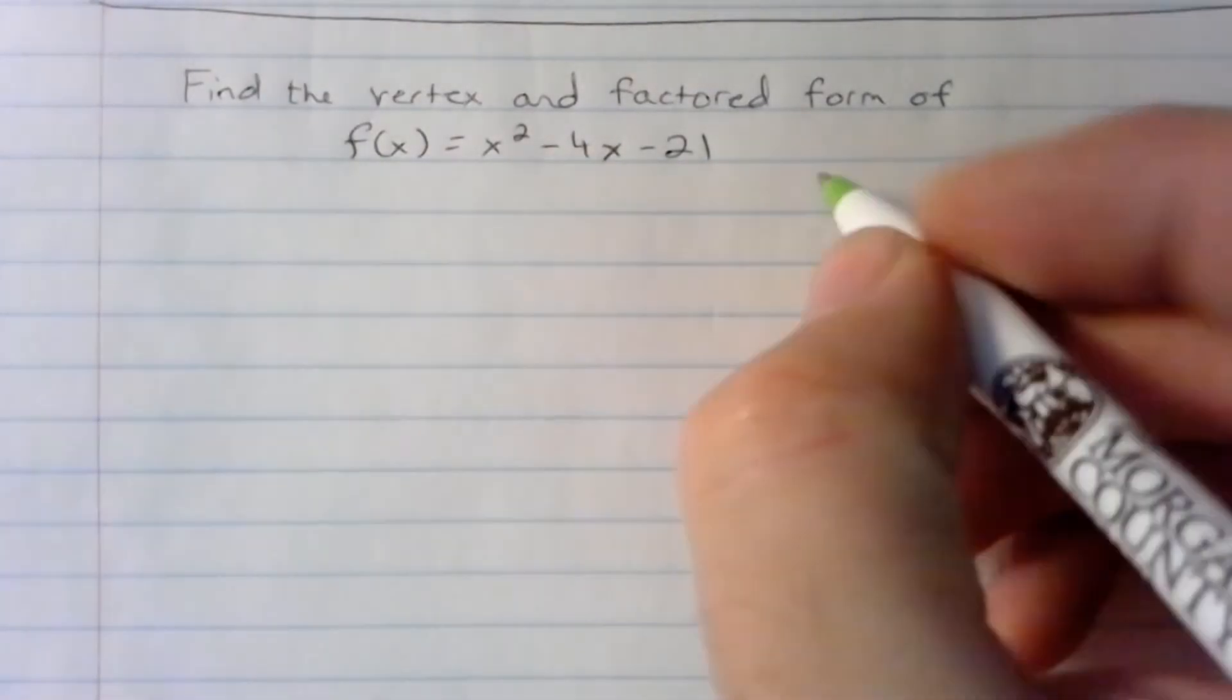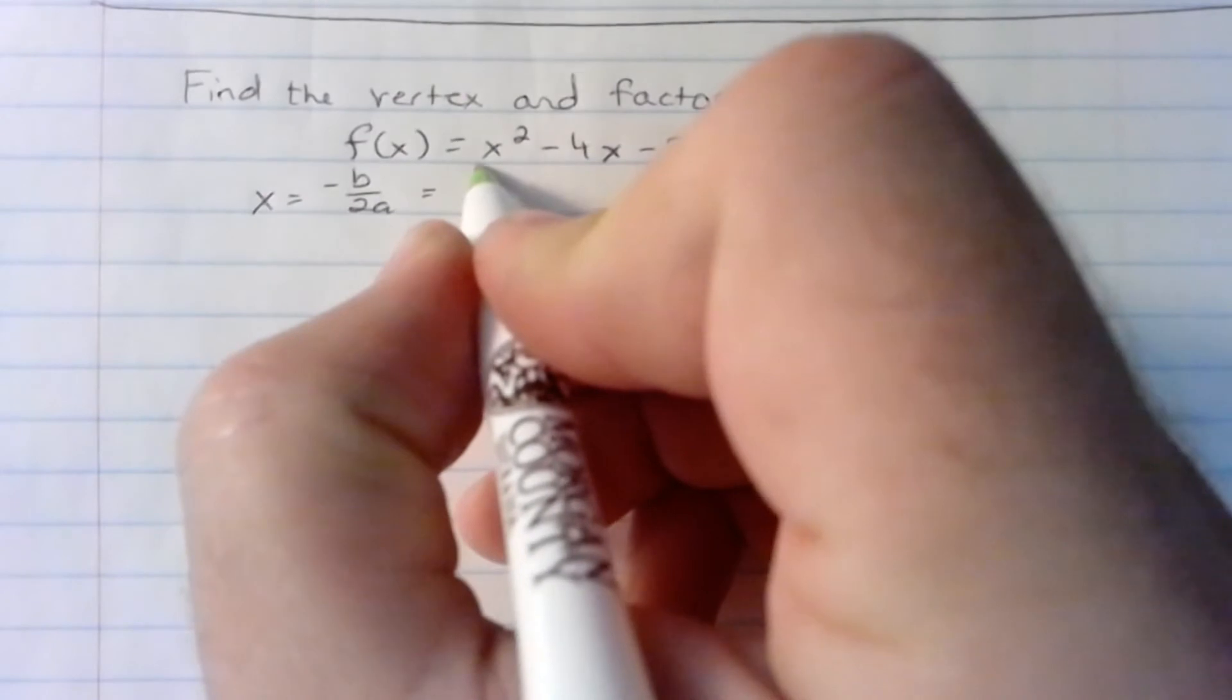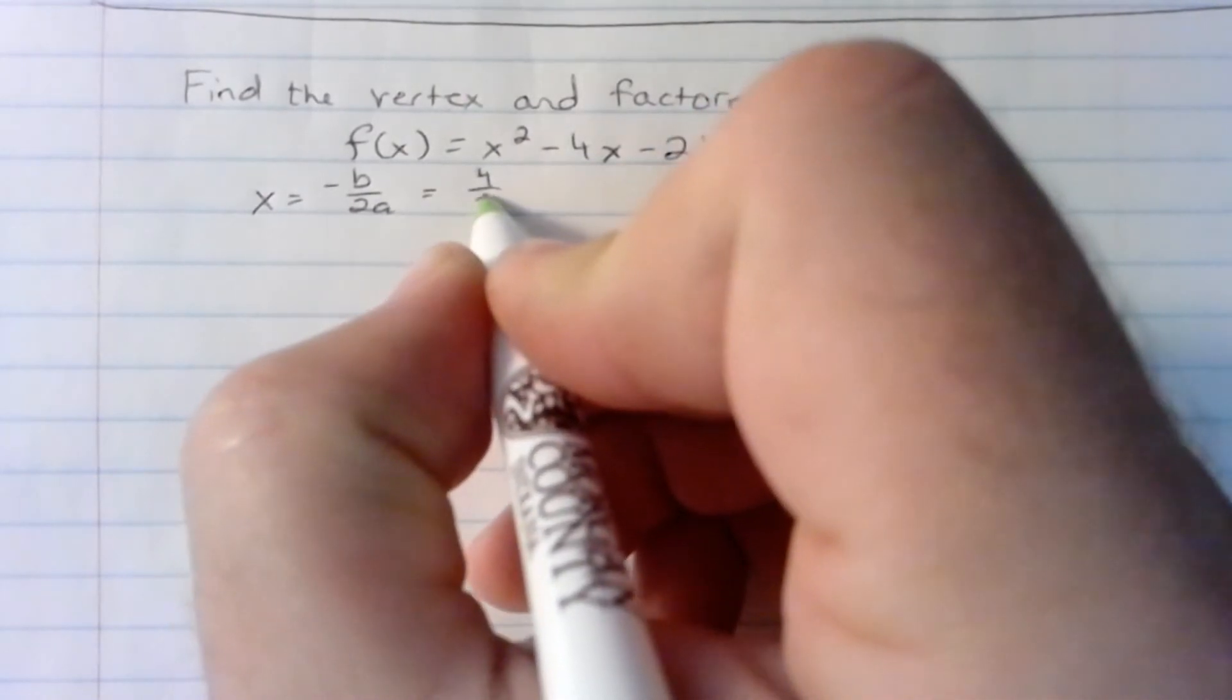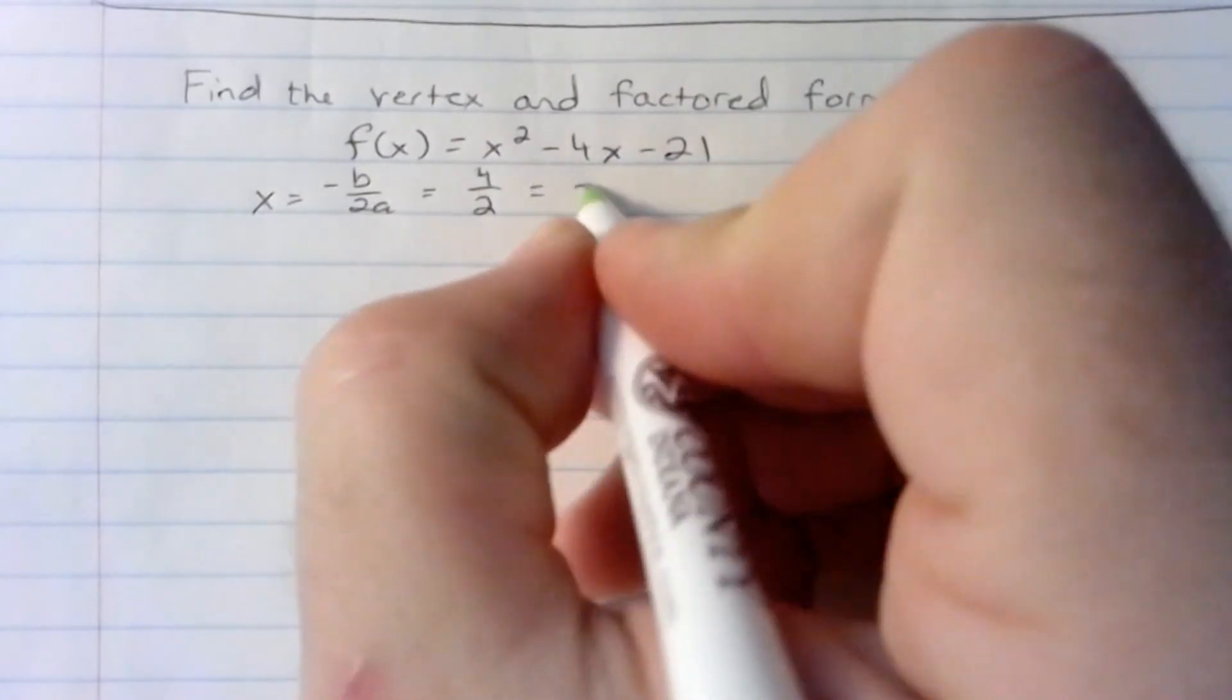The vertex can be found by x equals negative b over 2a. And in this problem, negative b would be 4. 2 times a would be 2. 4 over 2 is 2, so there's our x coordinate.